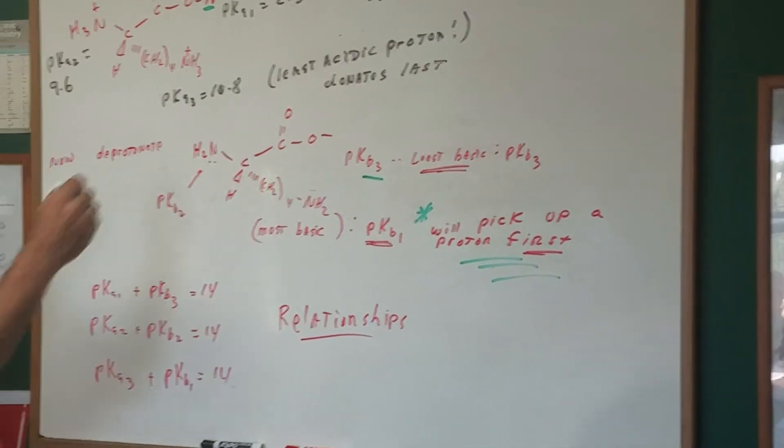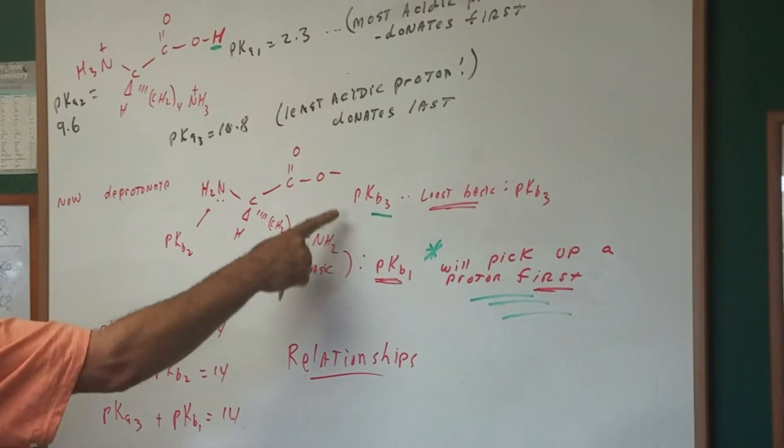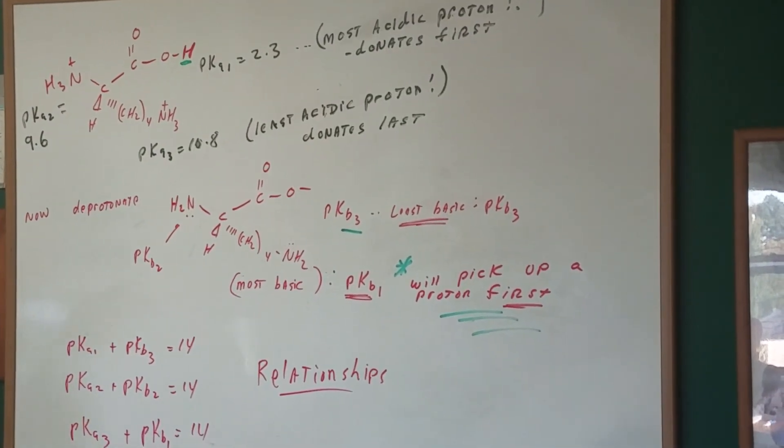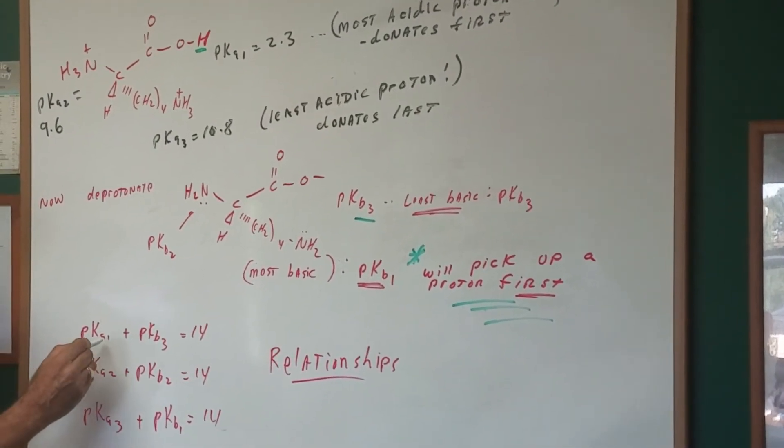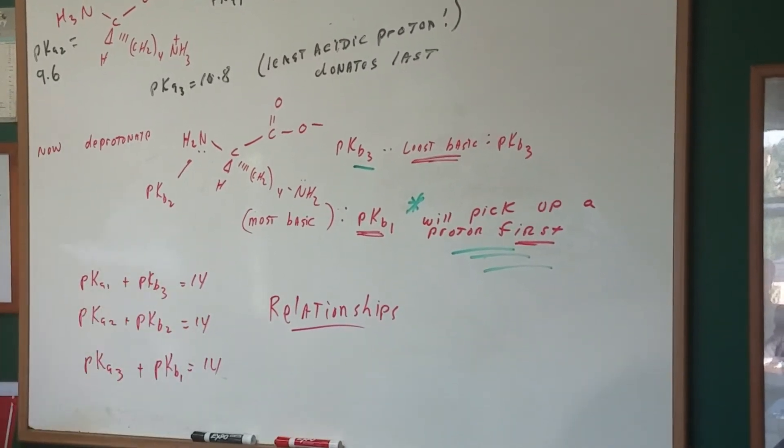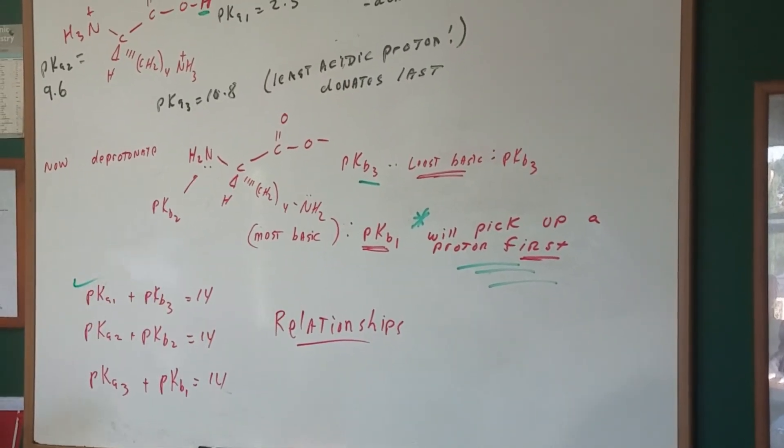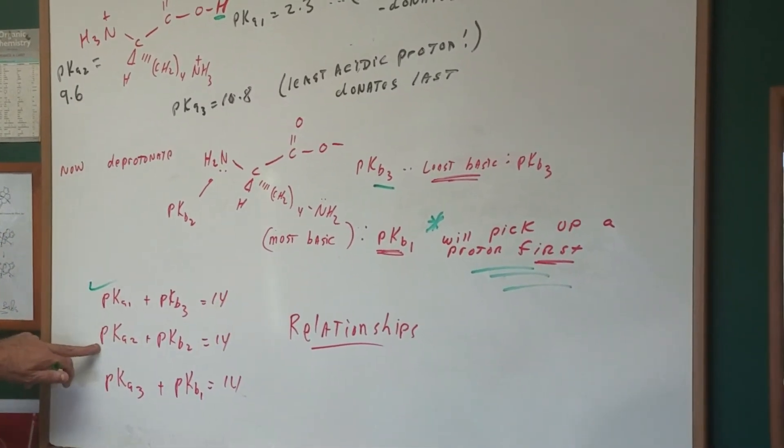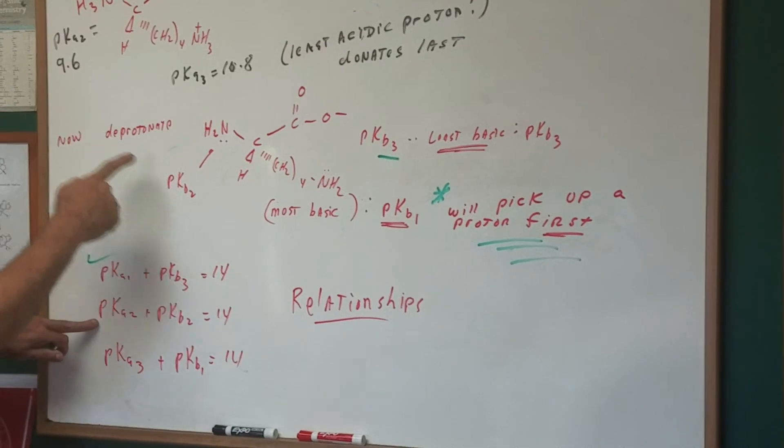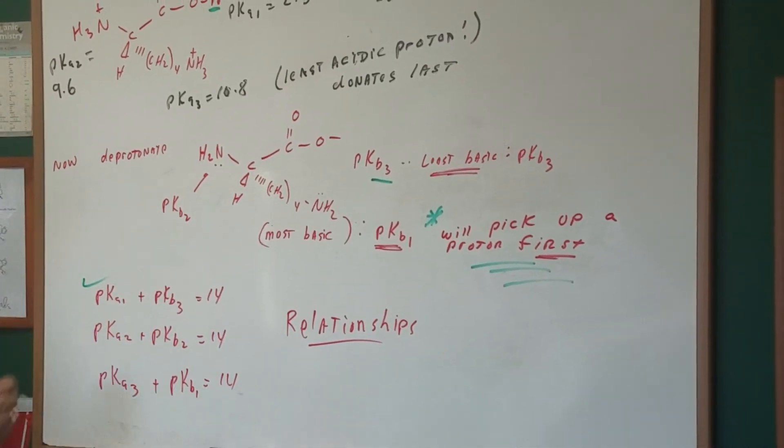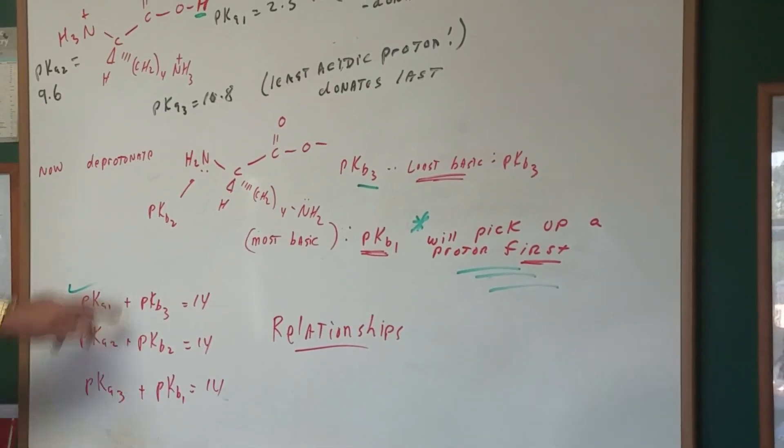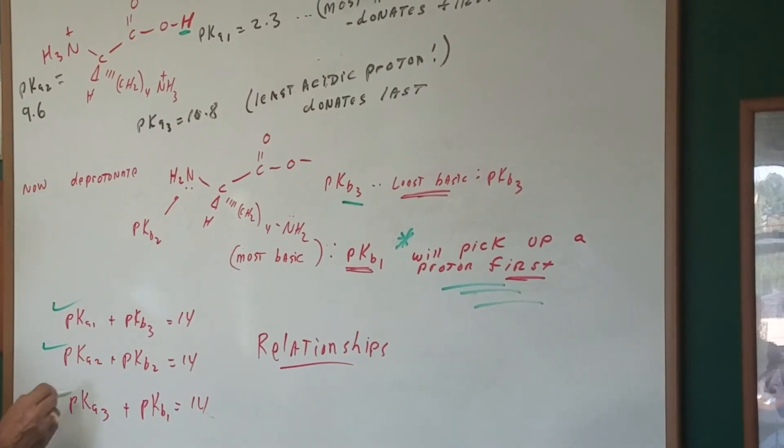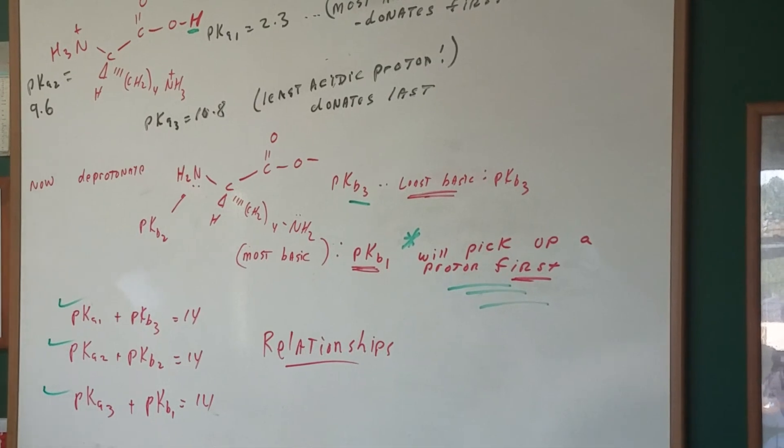So putting it all together, as you can see, PKA1 is related to PKB3. So now I can say PKA1 plus PKB3 equals 14. That would blow out the whole class. What would be another relationship? PKA2 is related to PKB2. And finally, PKA3, which was here, is related to PKB1. So we could derive these three relationships.